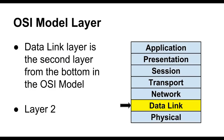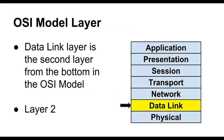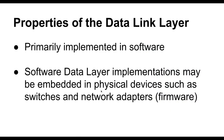The data link layer is the second layer in the OSI model, second up from the bottom. It sits on top of the physical layer, and the network layer sits on top of it. The data link layer is the first layer of the OSI model that's primarily implemented in software. The physical layer is typically implemented using hardware devices, while the data link layer is primarily implemented in software — often embedded in physical devices such as switches and network adapters. We call this type of embedded software firmware, because it's actually built into the hardware.